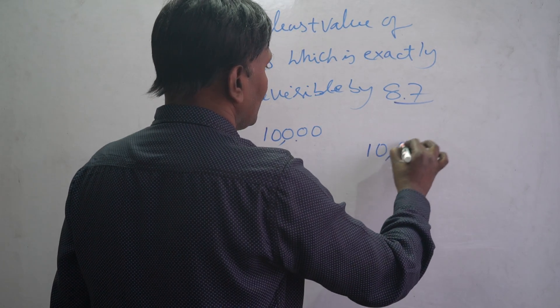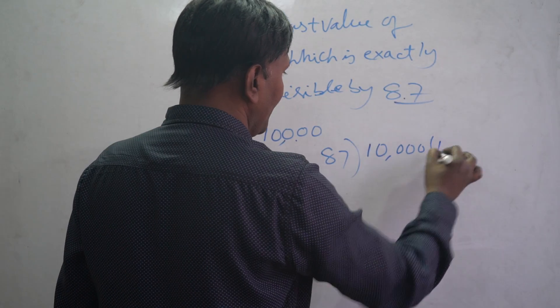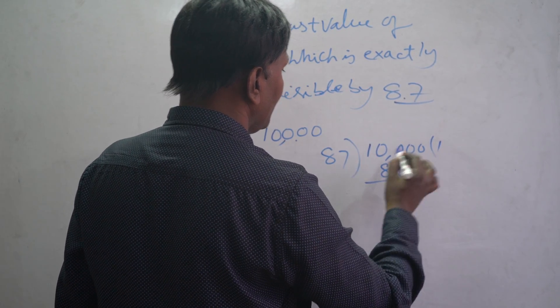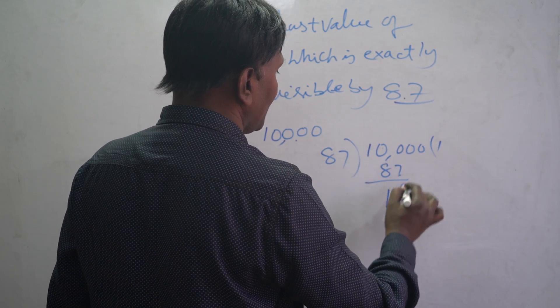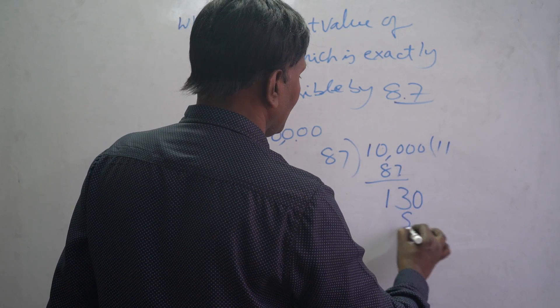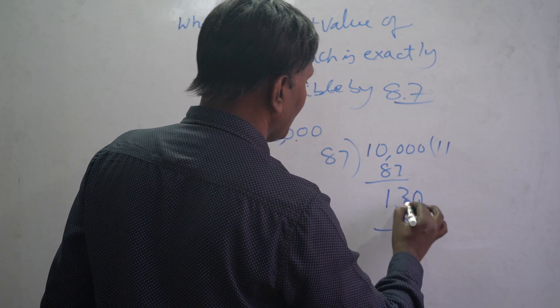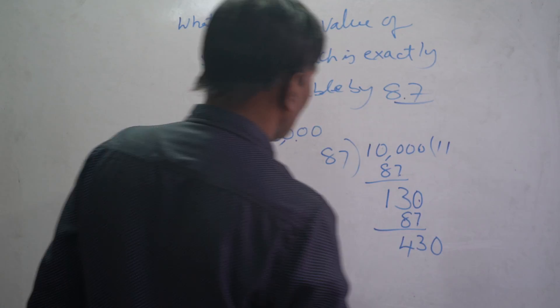For that, 10,000 divided by 87. 87 into 100: 87 times 1 is 87, 100 minus 87 is 13. Bring down the zero. 87 into 130: 87 times 1 is 87, 130 minus 87 is 43. Bring down zero.